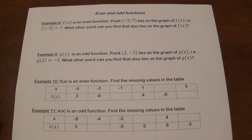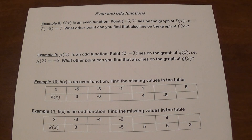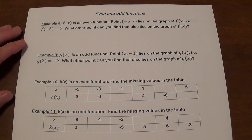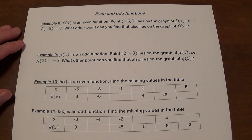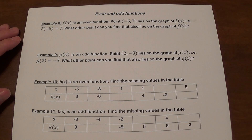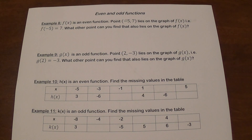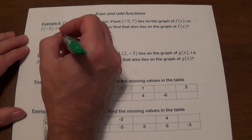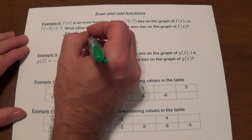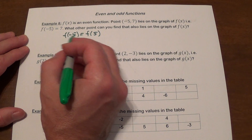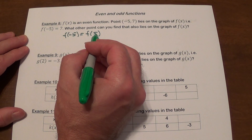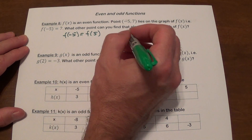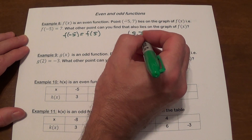Let's move to something a little more conceptual. f of x is an even function, and the point negative 5, 7 lies on the graph, meaning f of negative 5 is 7. What other point also lies on the graph? Since the function is even, f of negative x equals f of x. So f of negative 5 equals f of 5. We know f of negative 5 is 7, which means f of 5 is also 7. So the other point is going to be positive 5, 7.